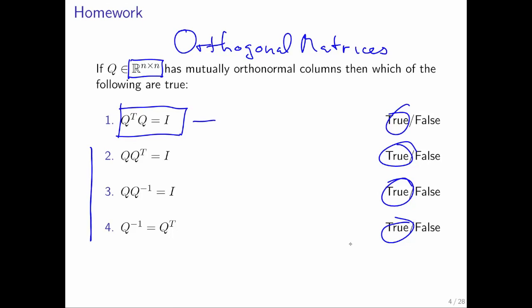Why? Well, notice that the fact that Q transpose Q equals I really means that Q inverse equals Q transpose. Otherwise, multiplying these two matrices together doesn't give you the identity. All of these matrices are square.